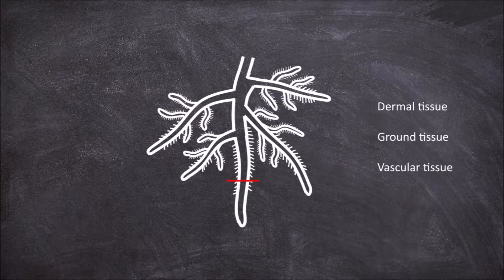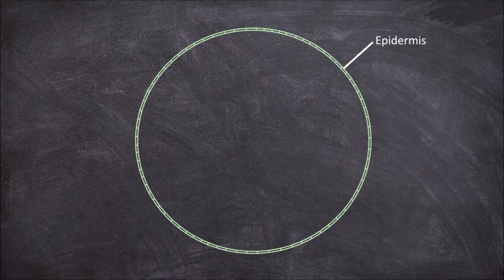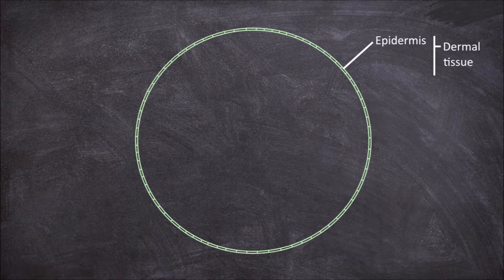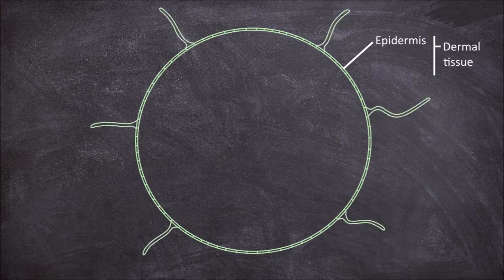If we take a cross section through the root, we see that the outer layer consists of the epidermis—this is the dermal tissue. The epidermis functions in providing protection for the root and has tubular extensions forming root hairs.